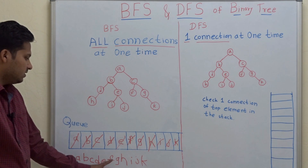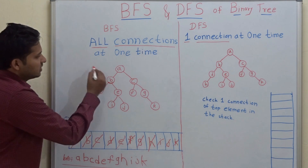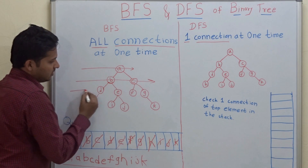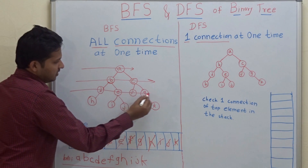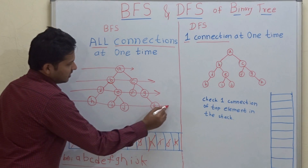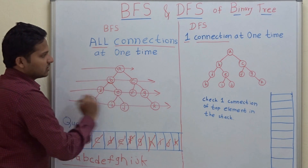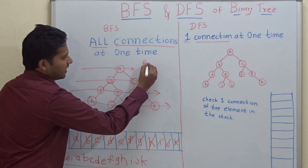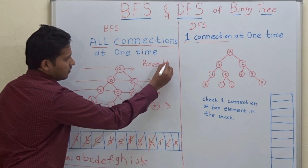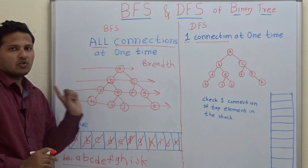The BFS result is A, B, C, D, E, F, G, H, I, J, K. This means breadth first search goes in level order, which is why it is called breadth.